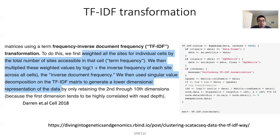In the methods section it says: we first weight all the sites for individual cells by the total number of sites accessible in that cell — that's the term frequency. We then multiply this weighted value by log of one plus the inverse frequency of each peak across all cells — that's the inverse document frequency. They then use singular value decomposition (SVD) or PCA on the TF-IDF transformed matrix to generate a low-dimensional representation of the data.